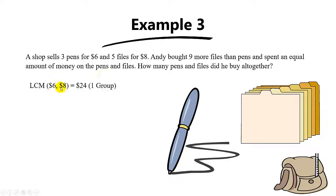Instead we need to find a common multiple of $6 and $8, and so this will be $24 and this will be one group. It's because the question says that Andy spent an equal amount of money on the pens and the files. That's why we have to make the multiples of 6 and 8 to be the same.